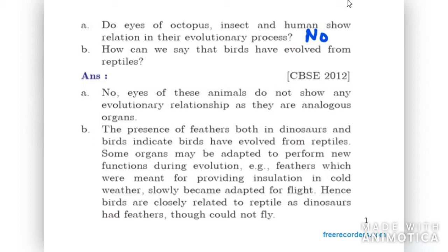Part B: How can we say that birds evolved from reptiles? In earlier organisms like dinosaurs, they used to have feathers meant for providing insulation in cold weather. Slowly, these feathers were adapted for flight by birds. Therefore, scientists have said that birds evolved from reptiles, as their feathers were adapted into a process of flight.